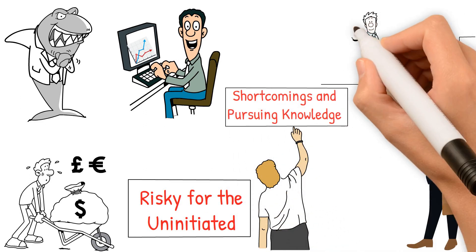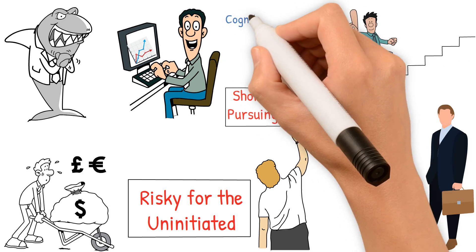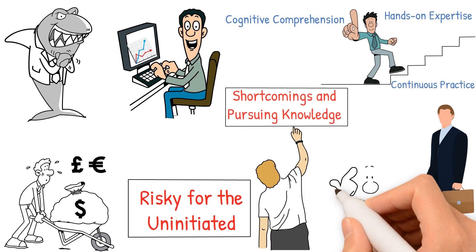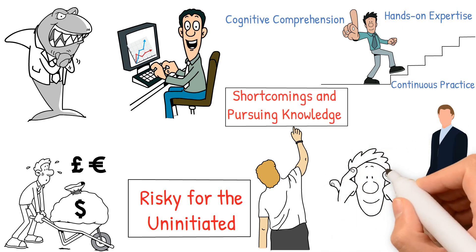Tony outlines the path to true financial proficiency: cognitive comprehension, hands-on expertise, and continuous practice, underscoring the need for consistent repetition to hone one's skills.